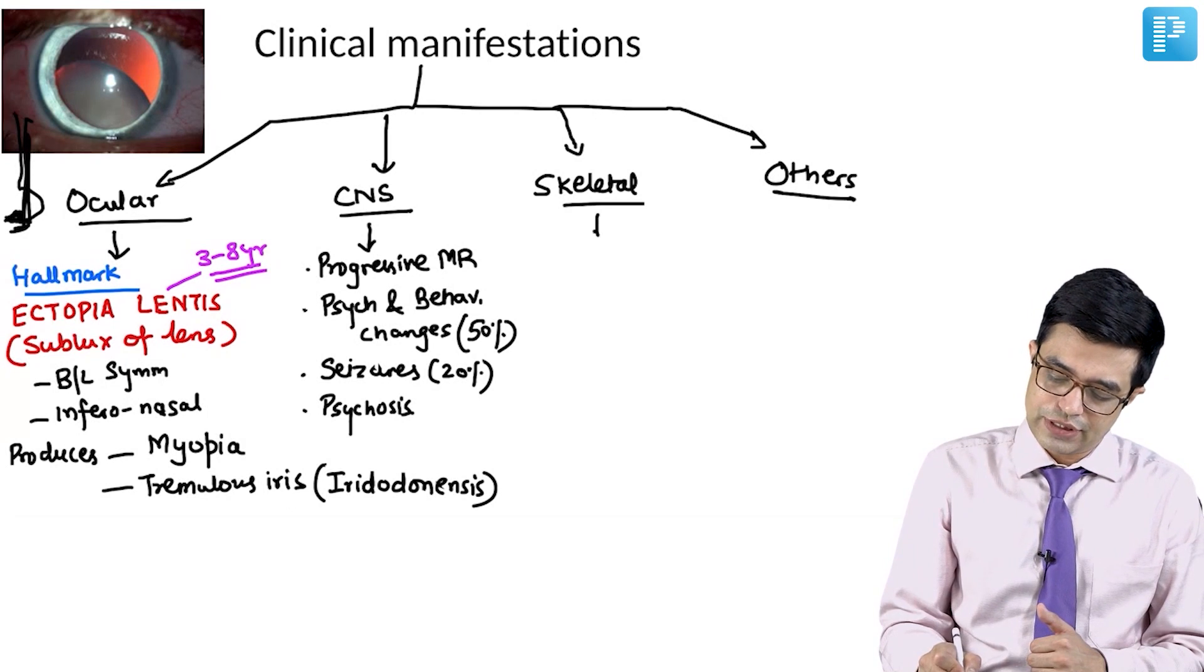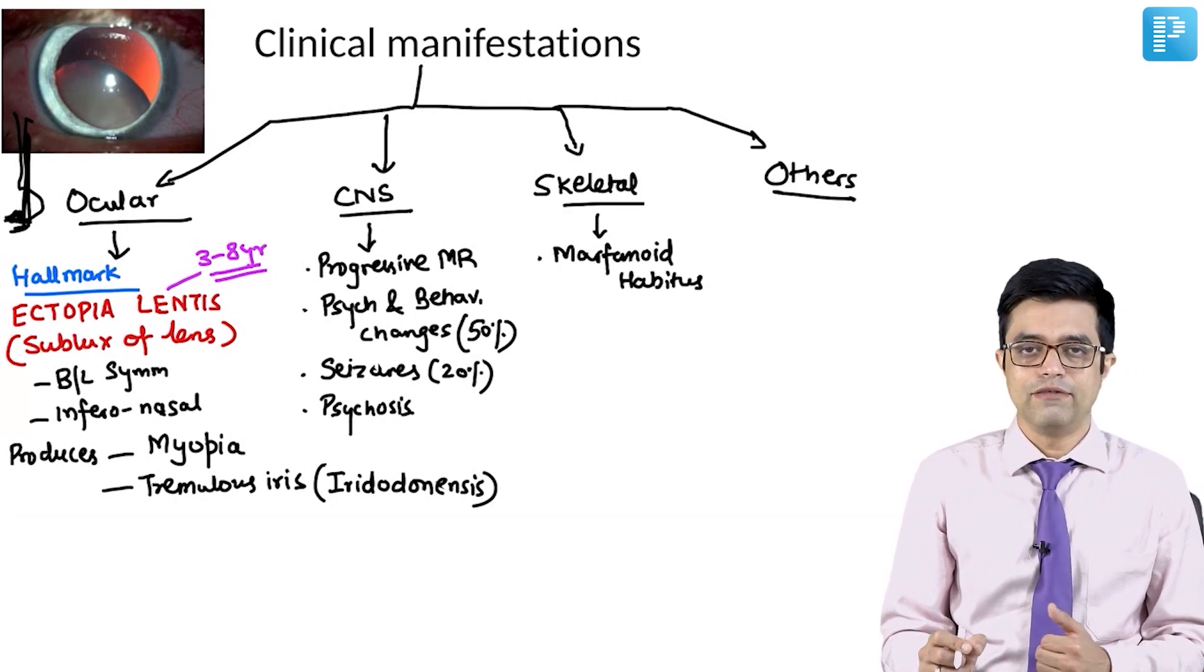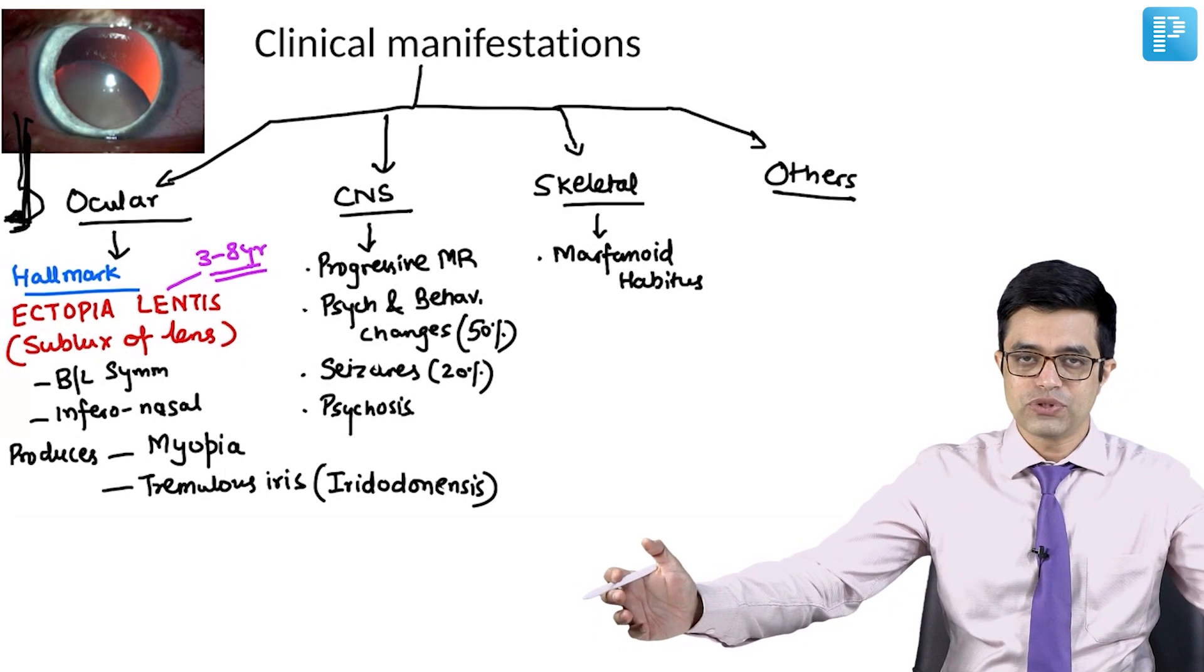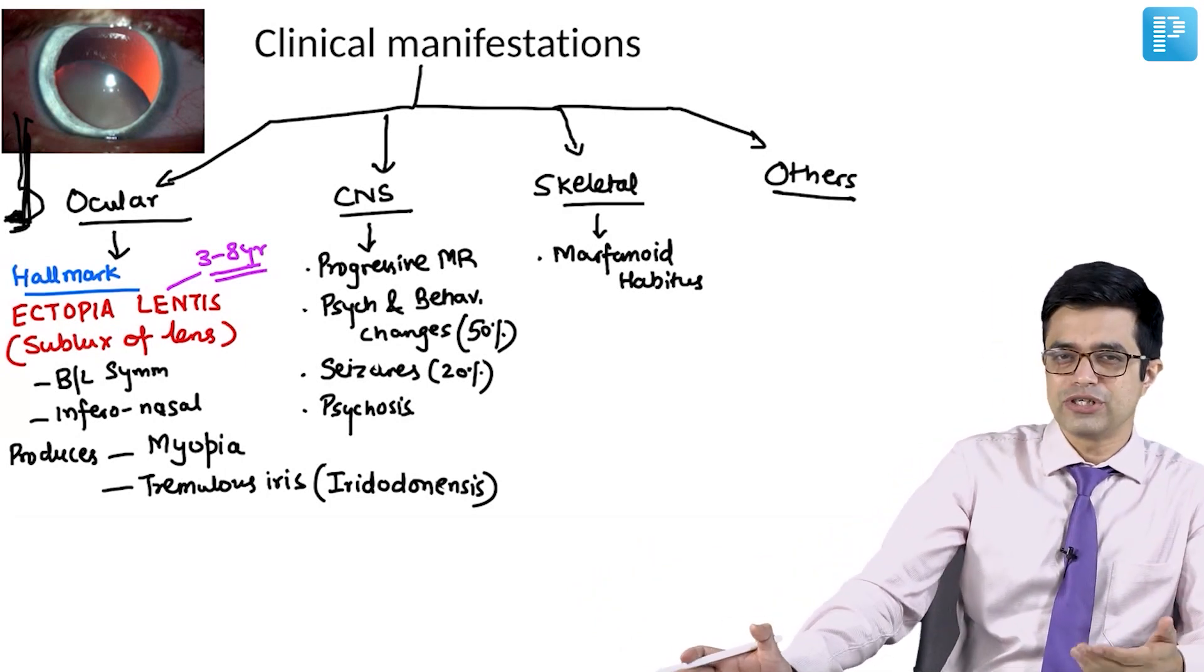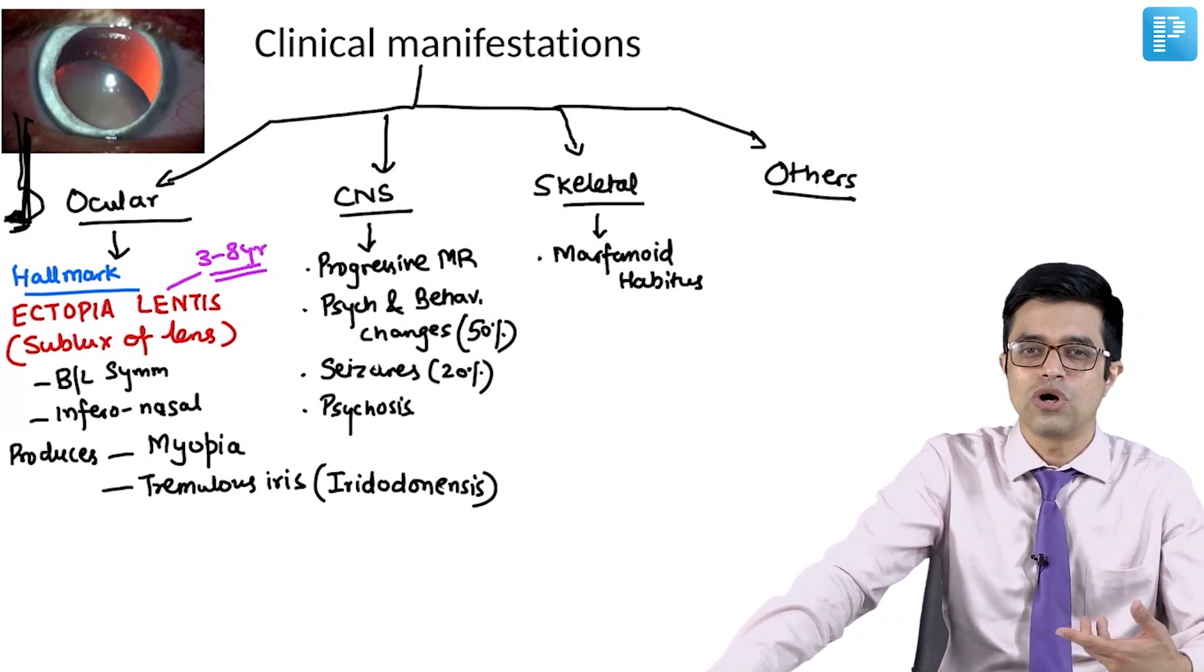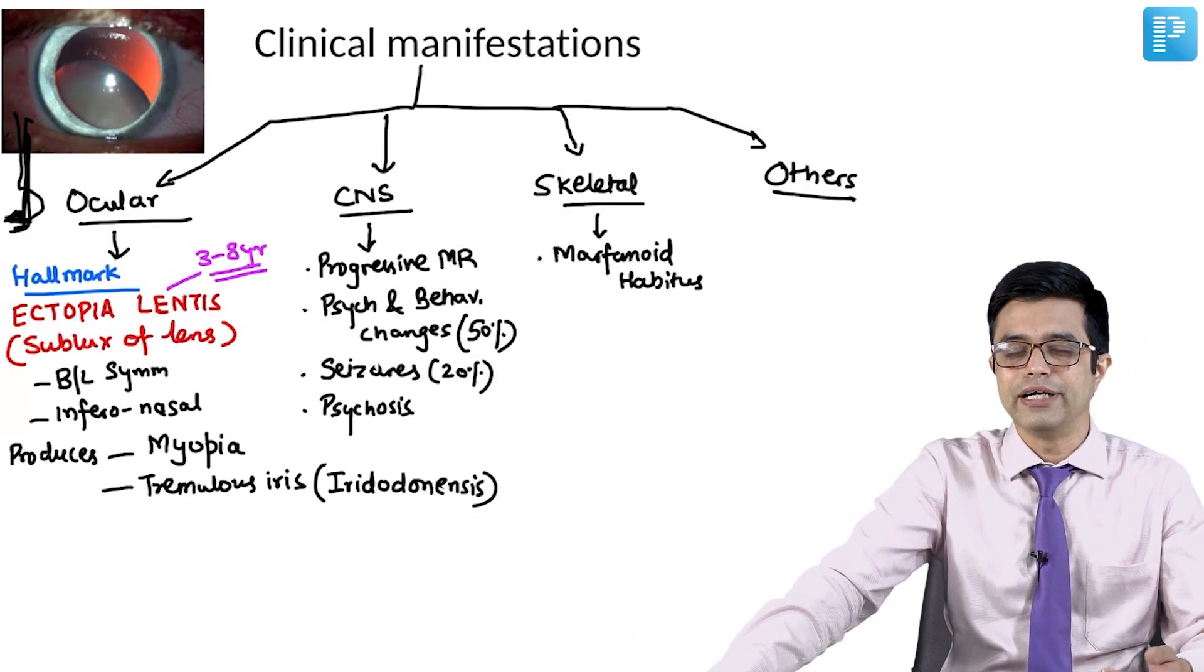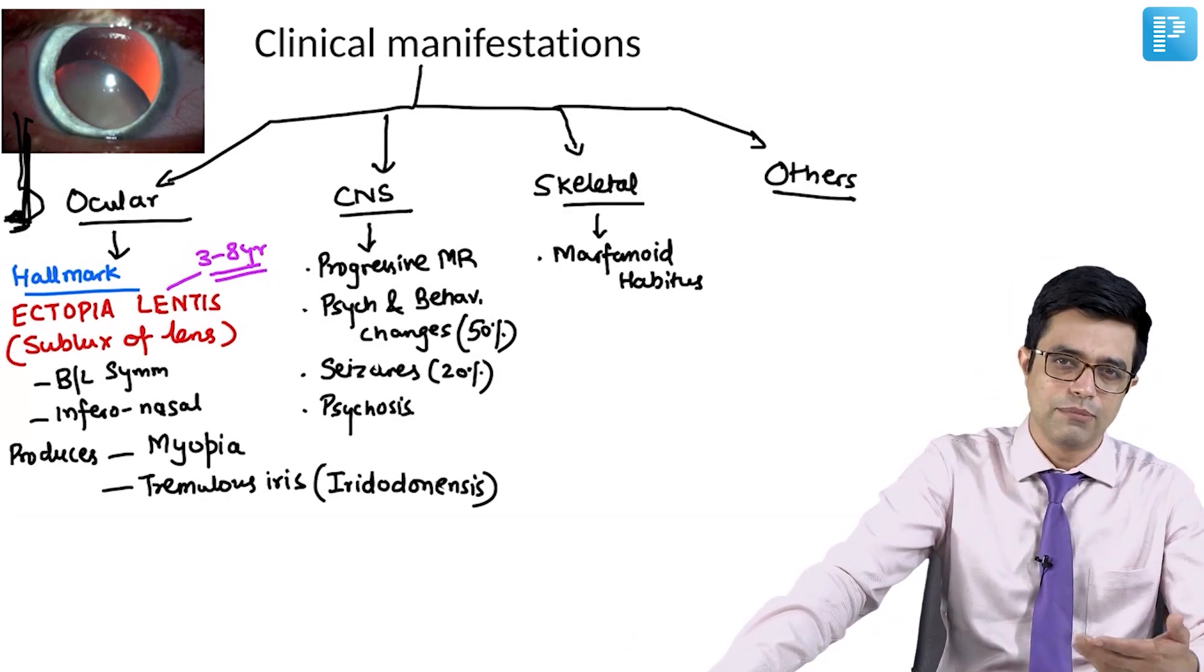Coming to skeletal manifestations, they have a typical Marfanoid habitus. Marfanoid habitus, I hope you all know, they will have long slender limbs and there will be arachnodactyly along with some patients having hyperextensible joint. Although hyperextensible joints is not a very classical finding associated with Marfan, some of these patients may rarely have these Marfan like features.